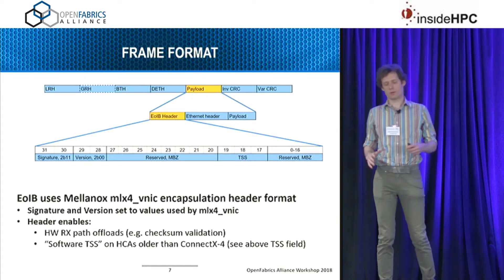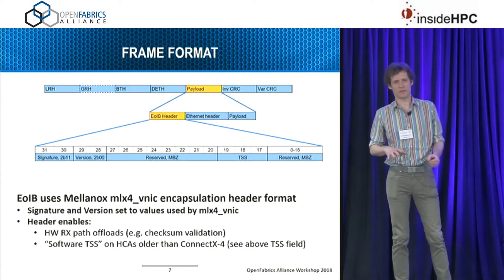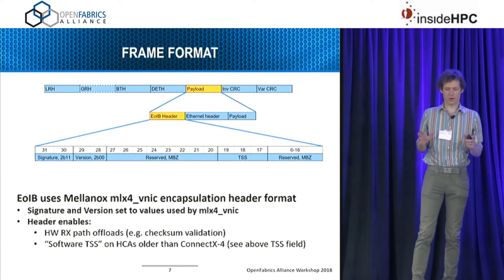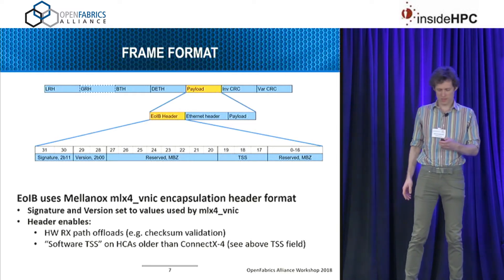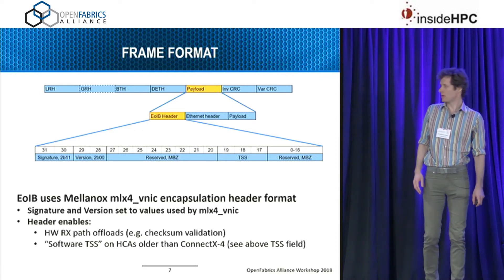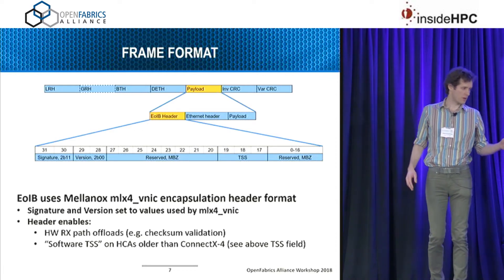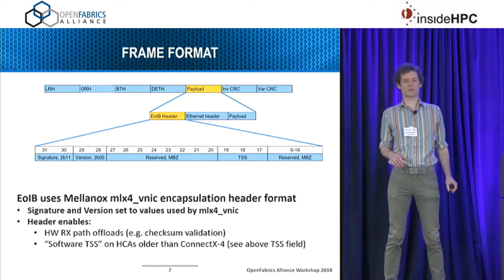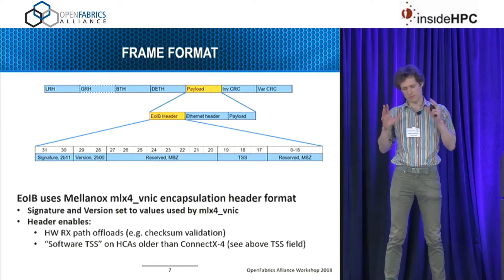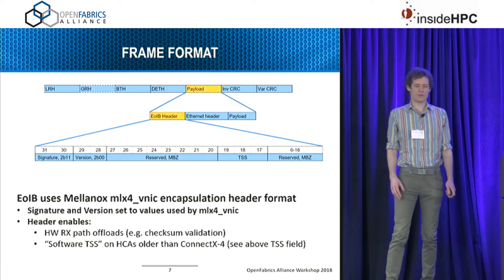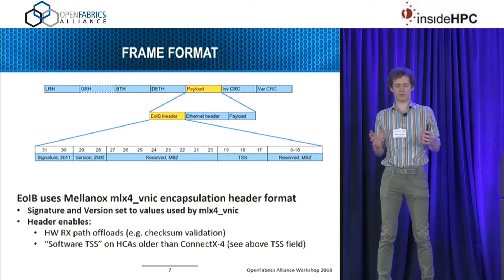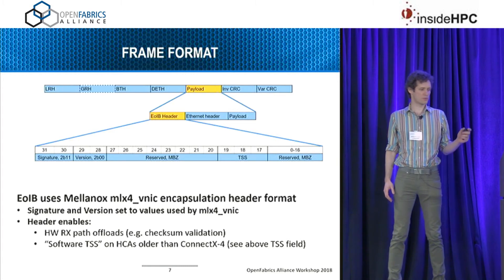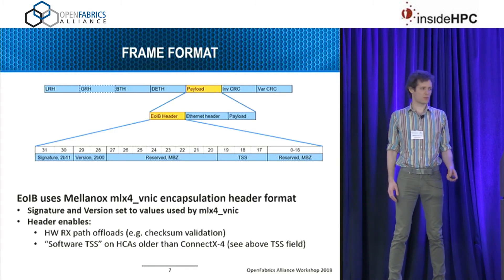Let's talk about how Ethernet frames actually get sent over InfiniBand. UIB sends Ethernet frames directly as InfiniBand payload, prepending them with a 4-byte header. The 4-byte header has a format similar to the one used by MLX4 VNIC, meaning that the version and signature fields are set to specific values to make the HCA treat the payload as an Ethernet frame. This is primarily needed to make receive-side hardware flows work — for example, checksum validation. This header is also used to support TSS for HCAs older than ConnectX-4.